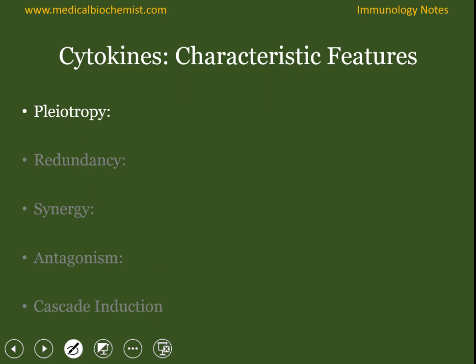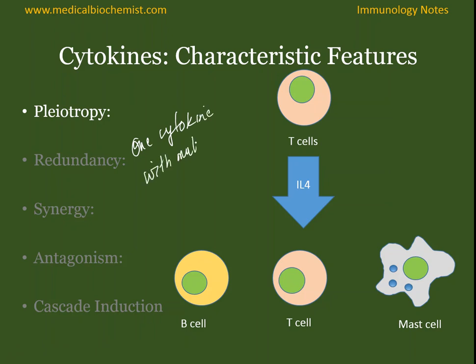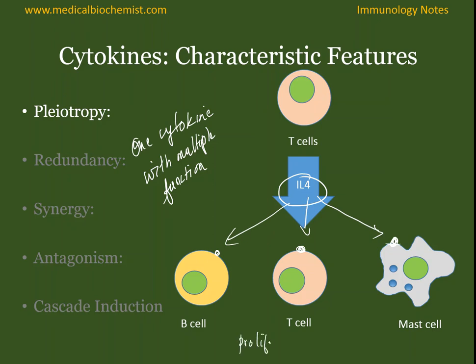Cytokines function in various manners. For example, it exhibits pleiotropy. Pleiotropy means one cytokine with multiple functions. For example, T cells secrete interleukin-4, and this IL-4 has receptors on B cells, T cells, and mast cells — all these cells proliferate in response to IL-4.